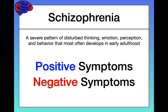So the positive symptoms of schizophrenia refer to an addition or an excess of atypical behaviors, emotions, or drives. Whereas the negative symptoms of schizophrenia refer to an absence or a decrease of typical behaviors, emotions, or drives.